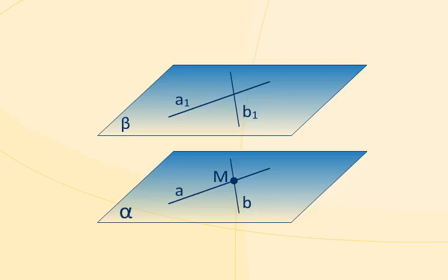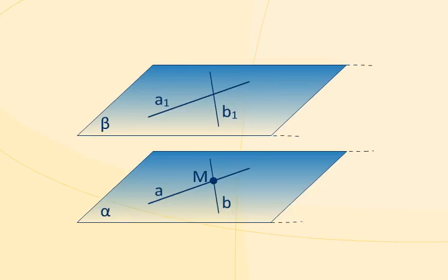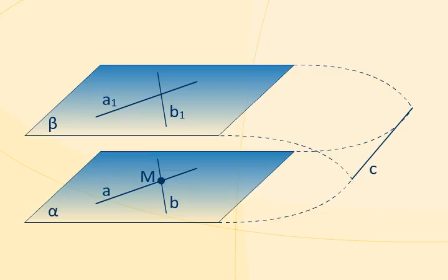Let's suppose that the planes alpha and beta are not parallel, so they intersect in the line C. The plane alpha passes through the line A. The line A is parallel to the plane beta. Moreover, the planes alpha and beta intersect in the line C. Thus, line A is parallel to line C.